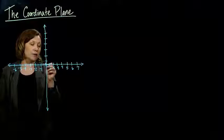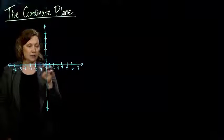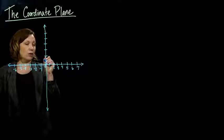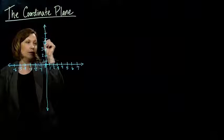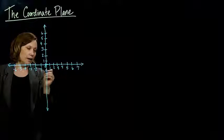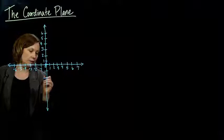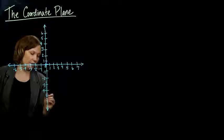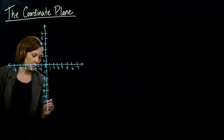They cross at 0, where both number lines are 0. So this point is 0 for both numbers. When it goes up, the up is the positive direction, just like on a thermometer. And the down, we are going down. So this is our negative direction.